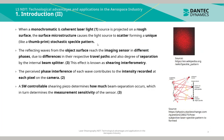When a monochromatic and coherent laser light source is projected on a rough surface, the surface microstructure causes the light to scatter, forming a unique, thumbprint-like stochastic speckle pattern. The reflecting waves from the object surface reach the imaging sensor in different phases due to differences in their respective travel paths and the degree of separation by the internal beam splitter. This effect is known as shearing interferometry.